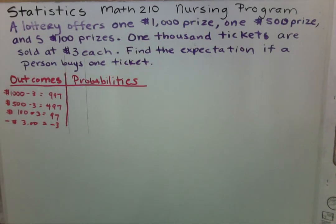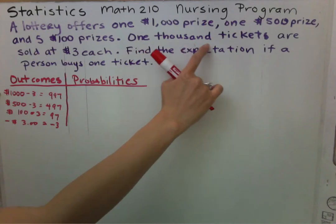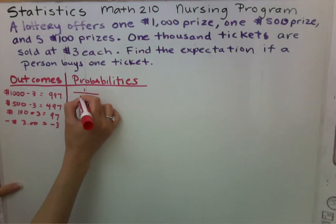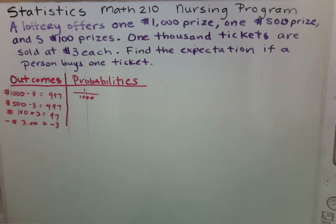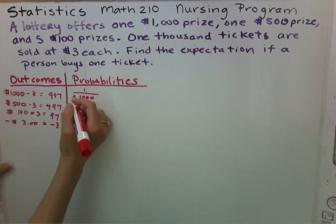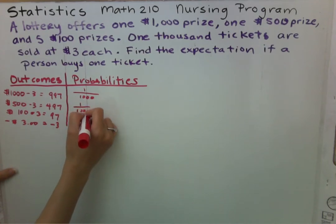The probability of winning a $1000 ticket is one out of one thousand tickets — one out of a thousand chances. To win a $500 ticket, it's also one out of one thousand tickets, because only one thousand tickets are being sold, so that is your probability.